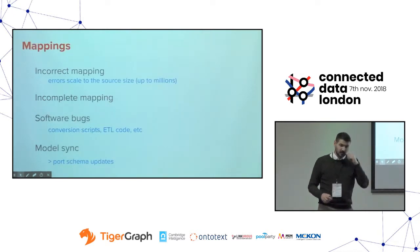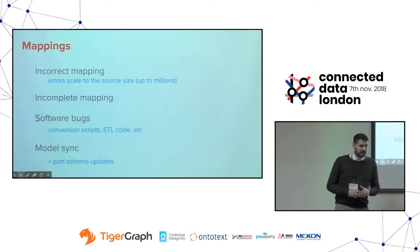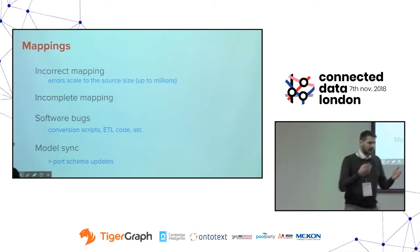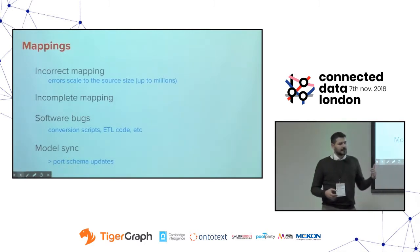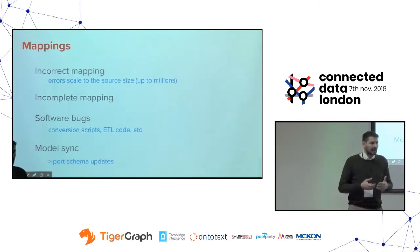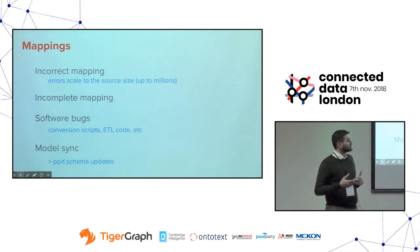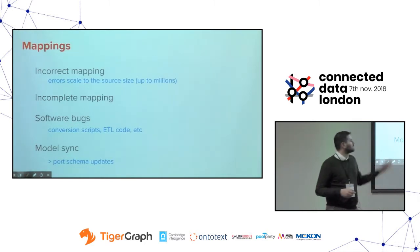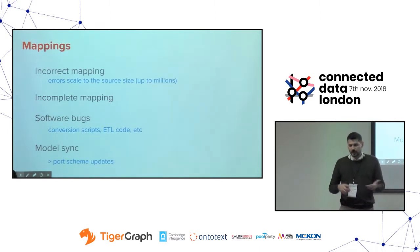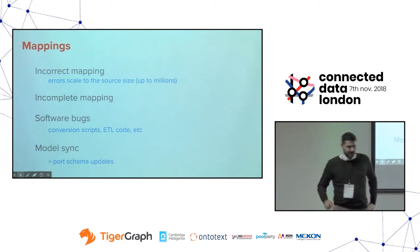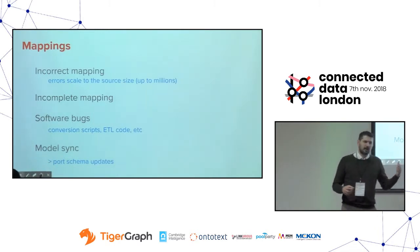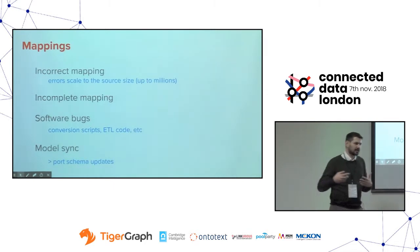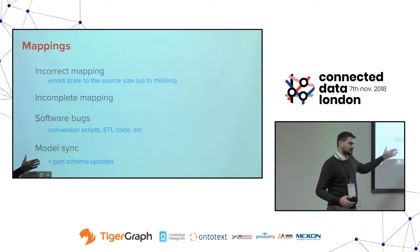Mappings are a very common source of errors. Incorrect mappings scale to the data size, which can be millions or billions of triples. If you have a CSV file and map one column incorrectly, every single value in your data gets mapped into an error and propagates. Fixing these after data is fused into your master schema is quite hard to trace and fix. Incomplete mappings, software bugs in ETL code, and poor model sync between mappings and schema are all additional common issues.